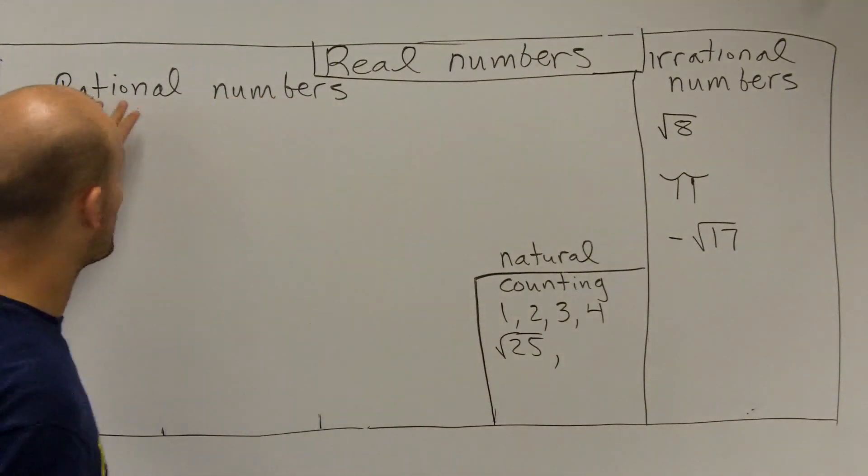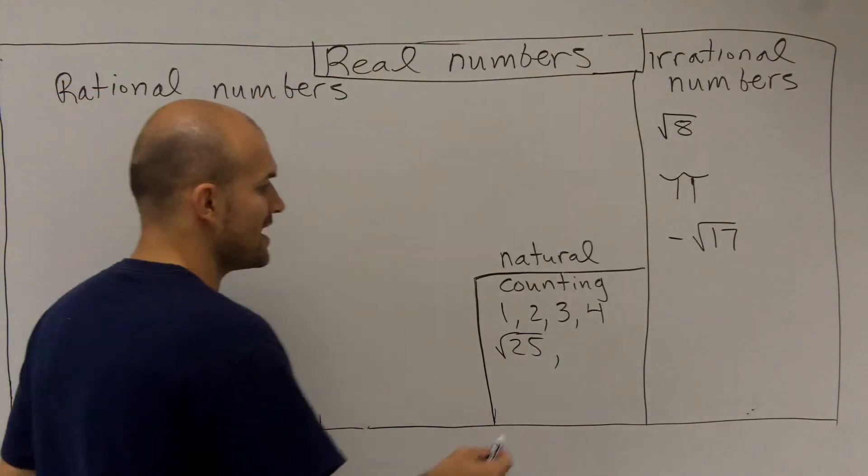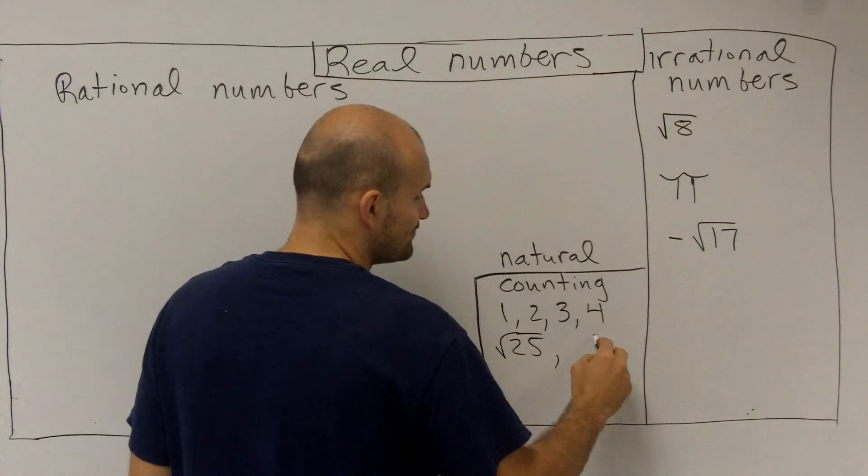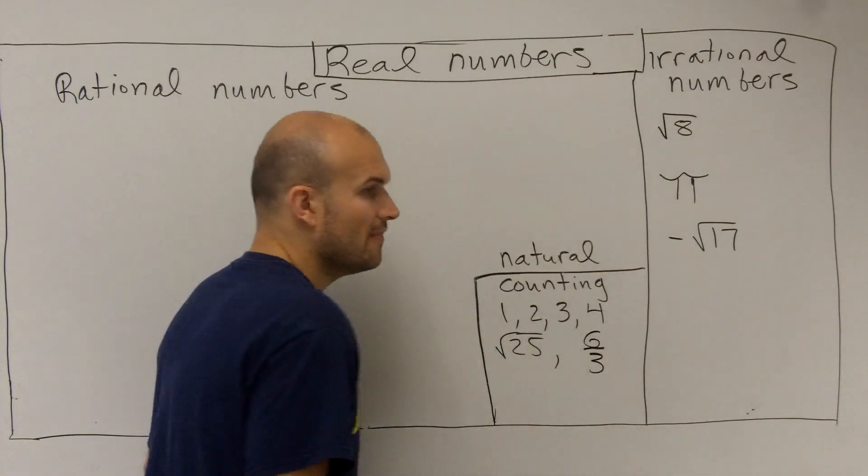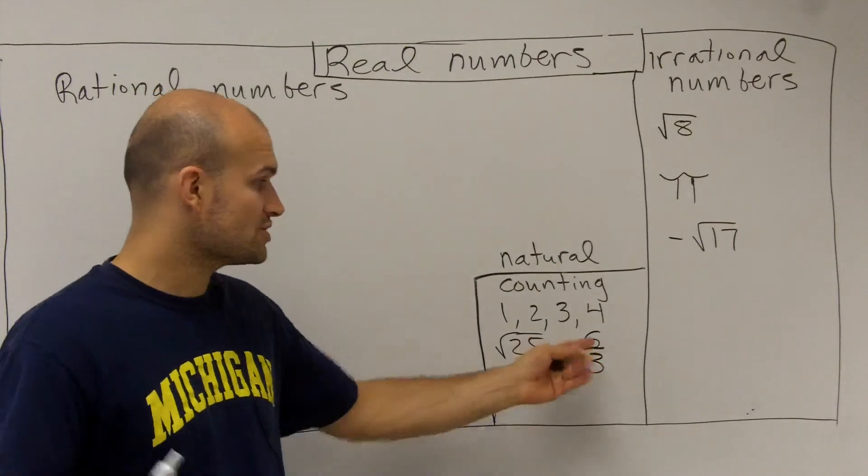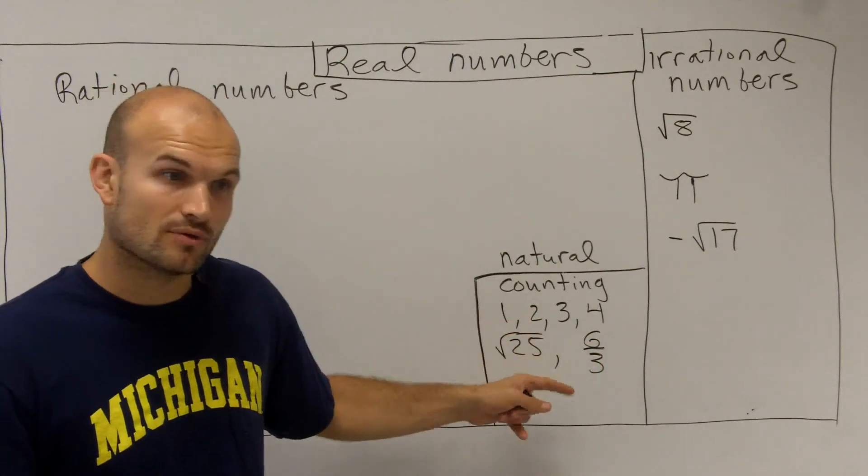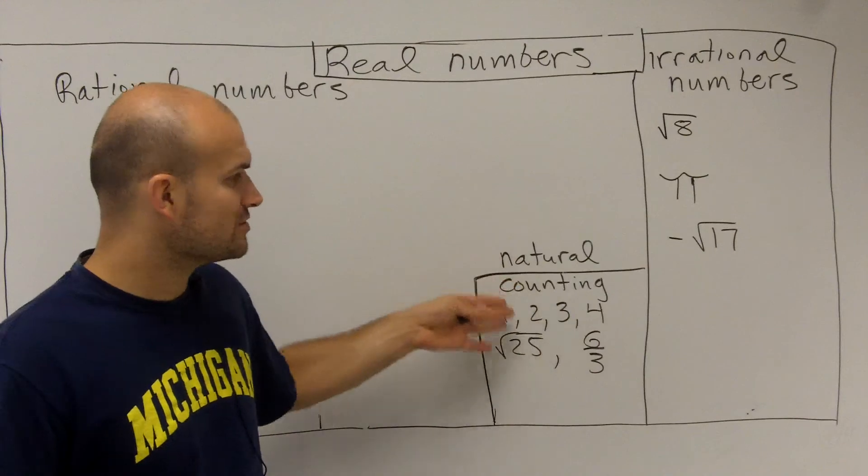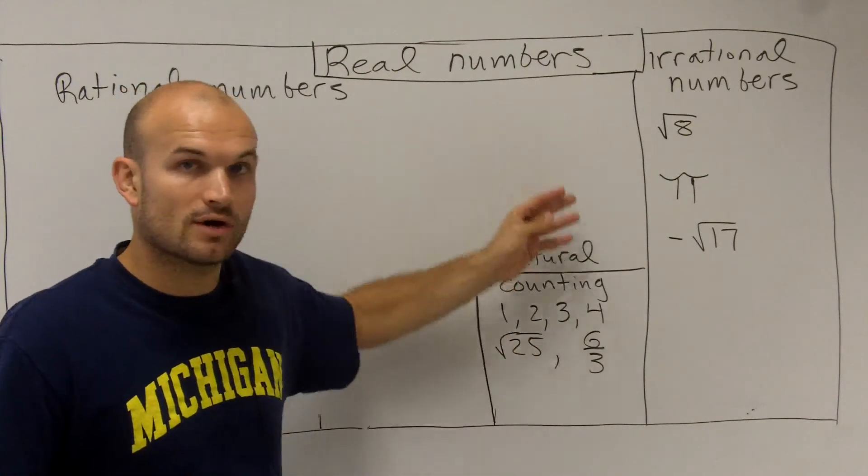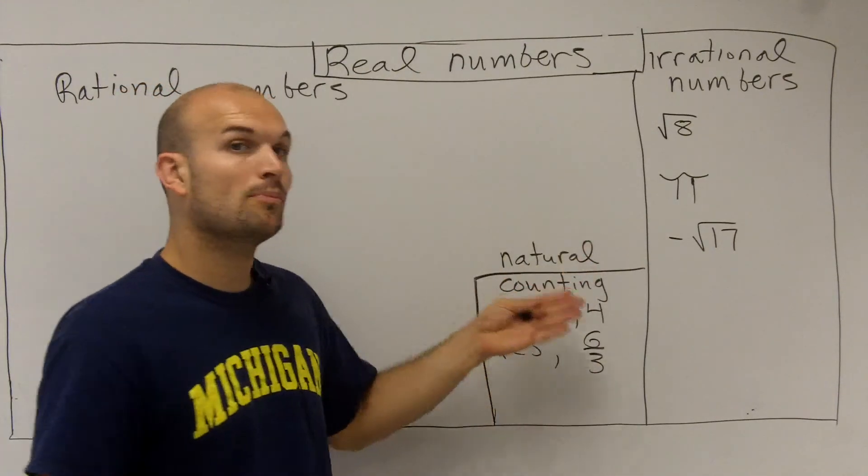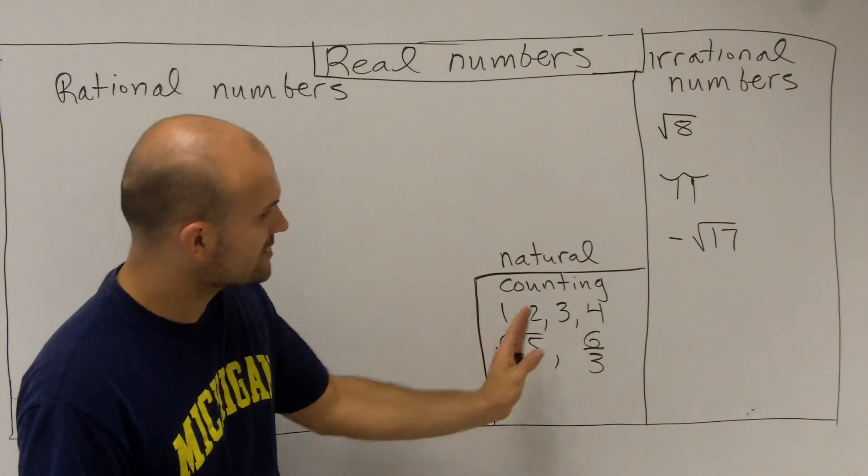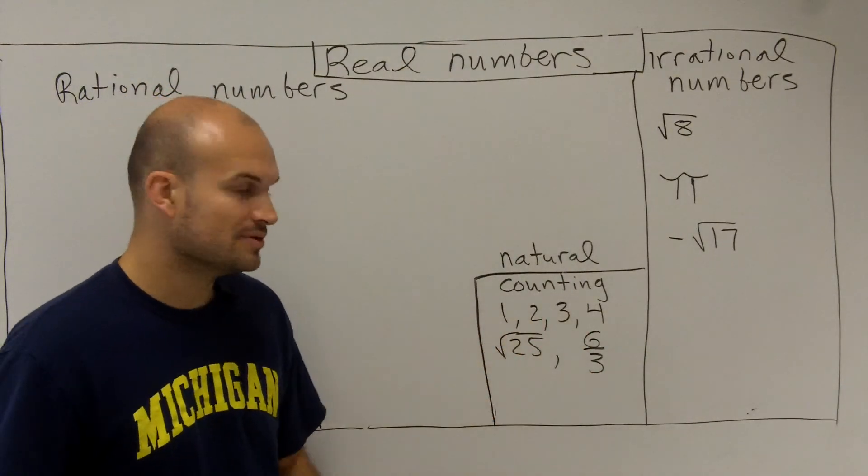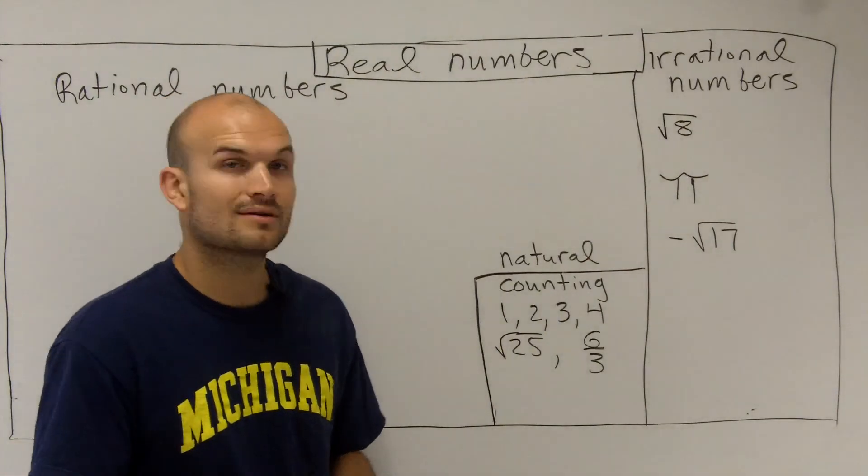We can also write it as a rational, meaning we can write it as a fraction. I could write six divided by three. Six divided by three is just a different way to represent the number two. But still, it is a natural or counting number, which you notice are all positive. These are all examples of natural or counting numbers.